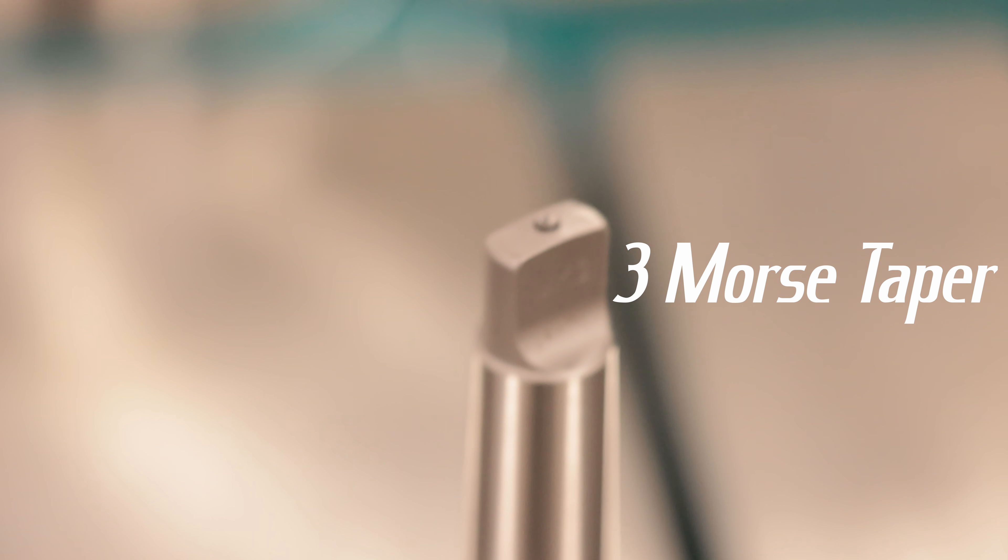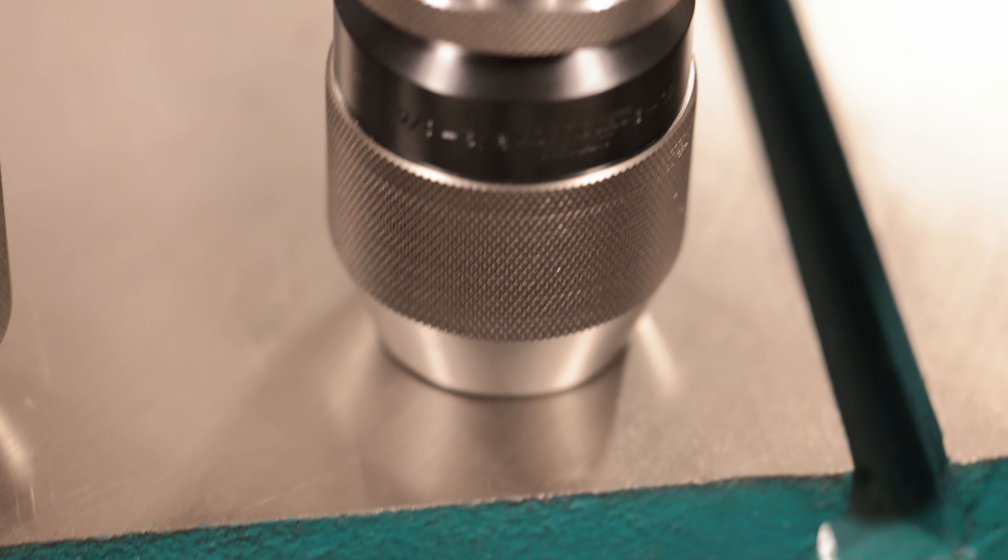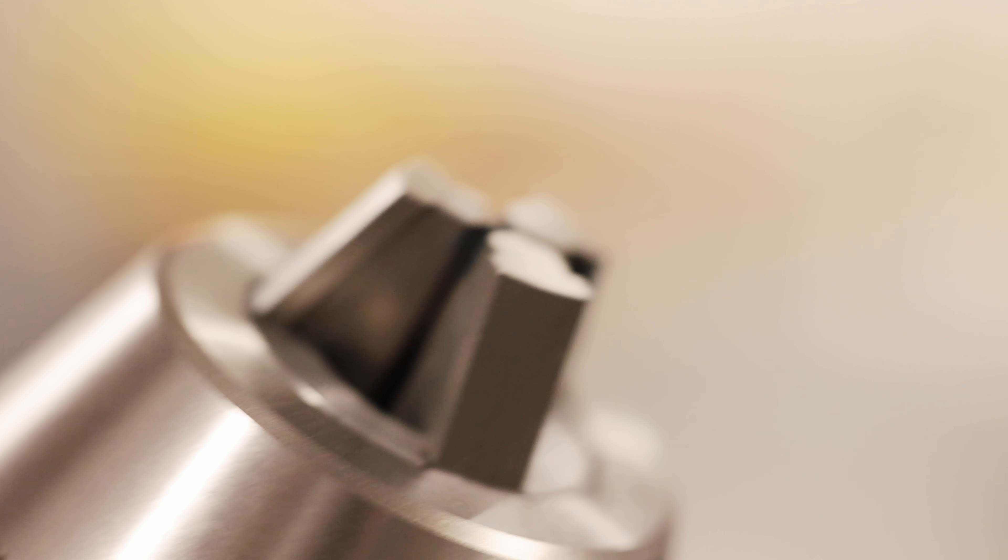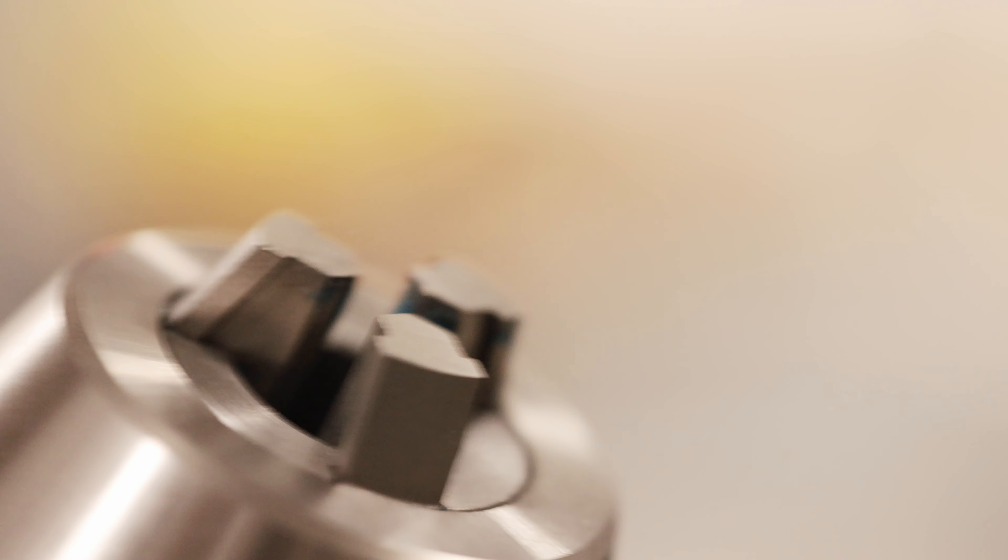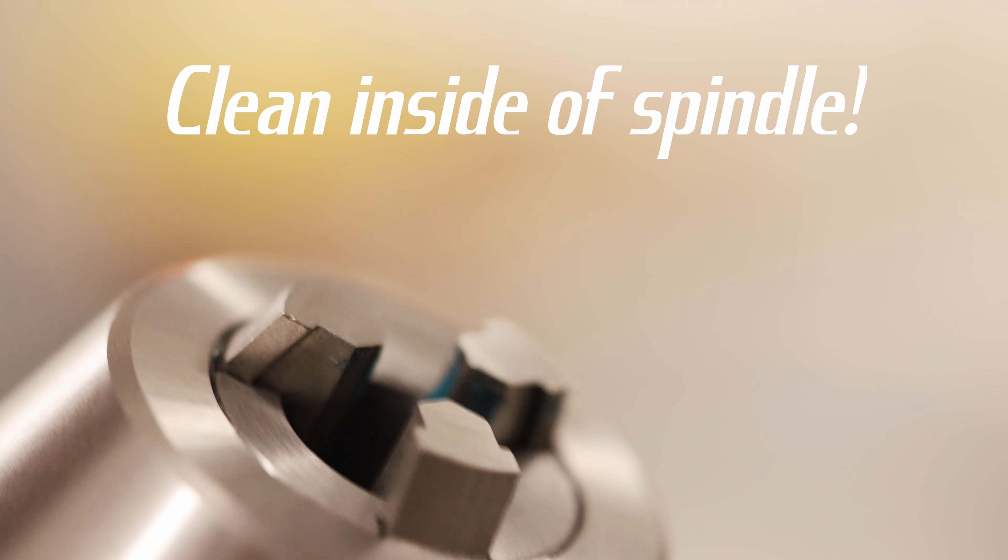When installing the chuck, we need to make sure the 3 Morse Taper is extremely clean. The first step is to make sure that the jaws are retracted all the way back. Make sure the center of the spindle is cleaned up inside of it as well.